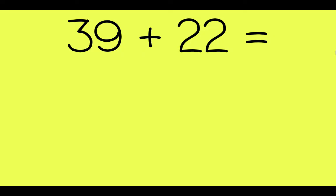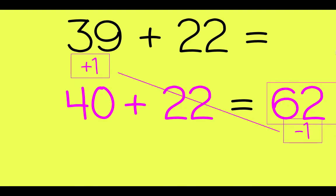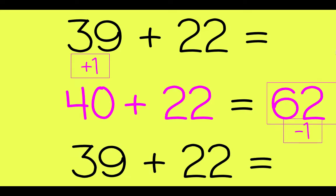39 plus 22. 39 can be made friendly by adding 1 to make it a friendly round 40, which will be much easier to work with. 40 plus 22 is 62. Remember to take that 1 away that you added in the beginning. So 39 plus 22 is 61.